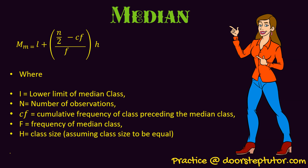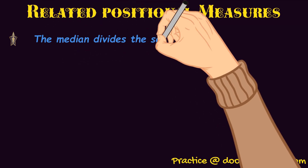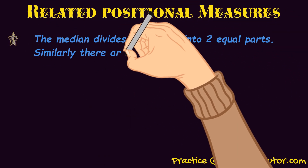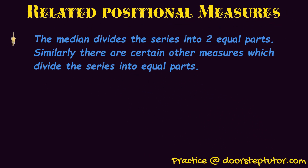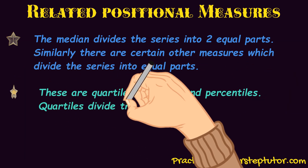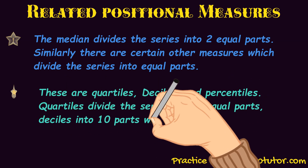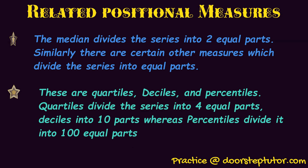There are related positional measures as well. The median divides the series into two equal parts, but there are other measures that divide the series into equal parts too. These are quartiles, deciles, and percentiles. Quartiles divide the series into four equal parts, deciles divide it into ten equal parts, whereas percentiles divide the series into one hundred equal parts.